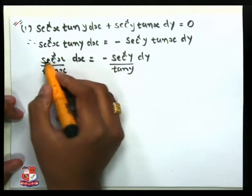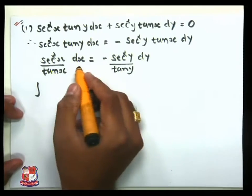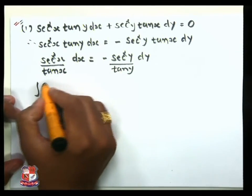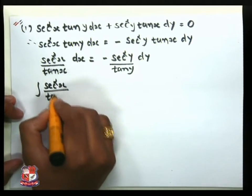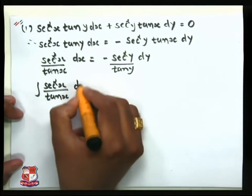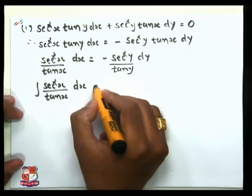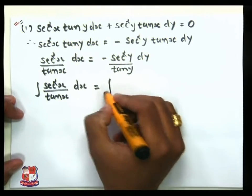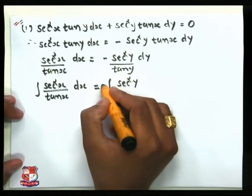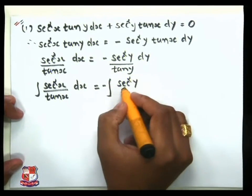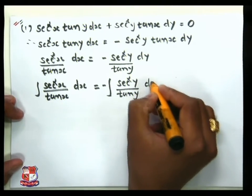Now we want to integrate both sides. So the next step is integration to find the values of x and y. We have the integral of sec²x / tan(x) dx on the left side, equal to the integral of −sec²y / tan(y) dy on the right side.